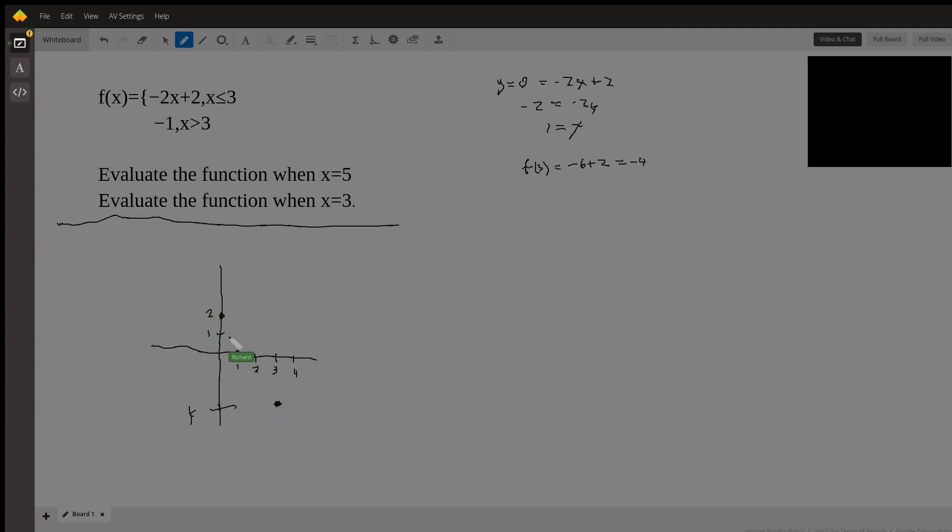And then on the other end of the line we've got an arrowhead because this has no left end point. See, this is whenever x is less than or equal to 3, so this goes on infinitely out in this direction.